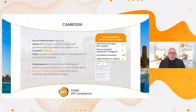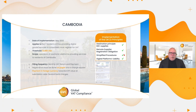A more recent example: Cambodia started last year. Non-resident companies previously needed a permanent establishment, but via the system they can register. They have a threshold of $15,000, and it includes also the operators of the electronic platform. If we look at the OECD principles, Cambodia ticks quite a few boxes: they have the destination principle, a remote supply registration, platform liability, and a simplified procedure.